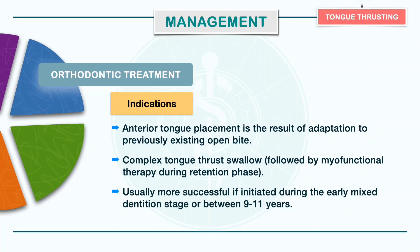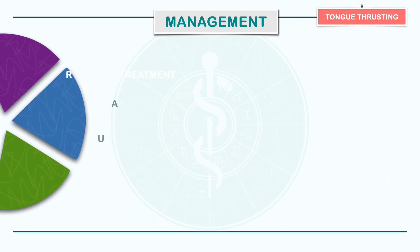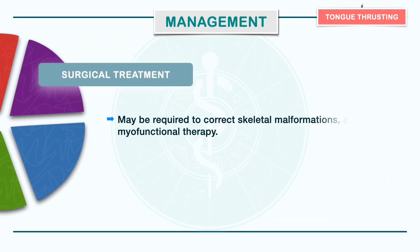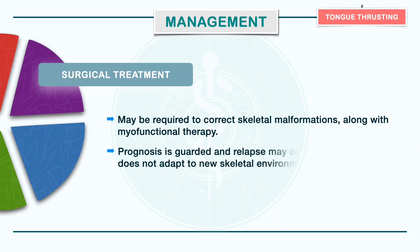Finally, orthognathic surgery may sometimes be required to correct skeletal malformations along with myofunctional therapy. The prognosis is guarded and relapse may occur if the tongue does not adapt to the new skeletal environment.